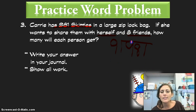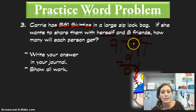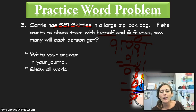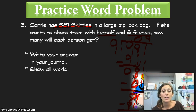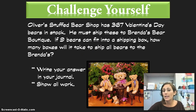9 goes into 9 one time. 1 times 9 is 9. Bring down our 8. Now here's our zero in the quotient — how many times does 9 go into 8? Zero times. You have to mark that zero. 0 times 9 is 0. 8 minus 0 is 8. Bring down our 1. 9 goes into 81 nine times — 9 times 9 is 81 — with 0 left over. So our quotient is 109. And we need to label it: 109 Skittles.